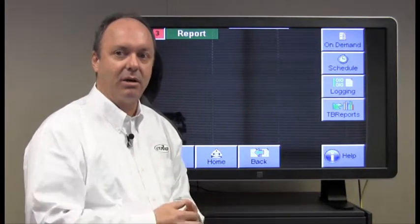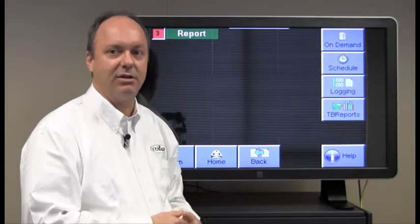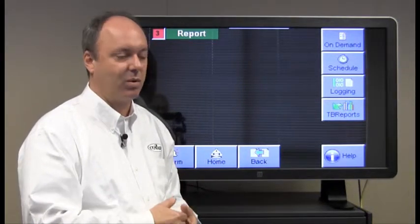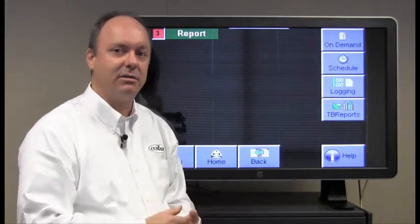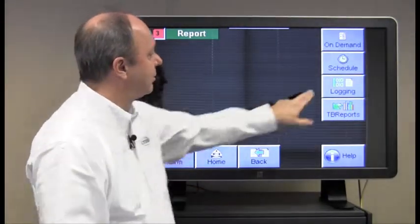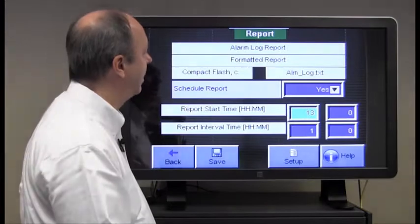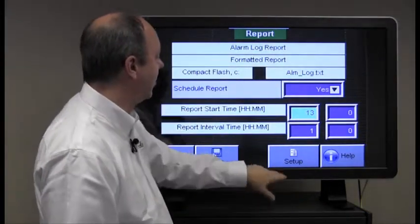You would save that and the next time you reach 1 o'clock in the afternoon, it will print an alarm report out to the destination, in this case the compact flash drive or the USB, wherever you defined. And it would do that every single hour.